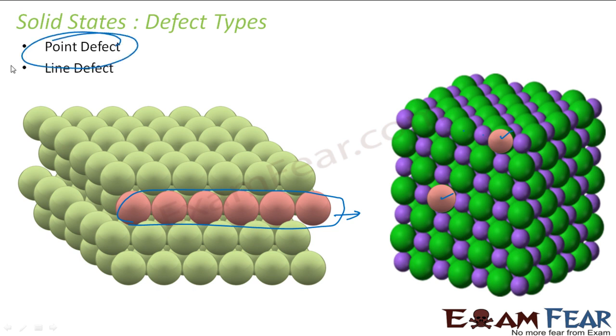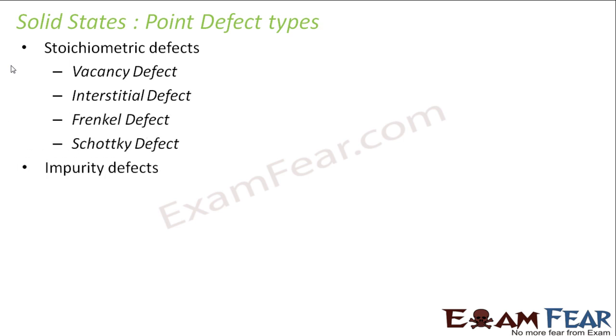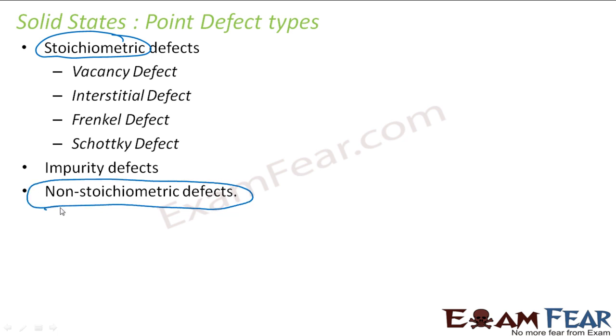We will focus only on the point defects in this chapter. Point defects are also of two types: stoichiometric defects, which include vacancy defects, interstitial defects, Frenkel defects, and Schottky defects. We have impurity defects and non-stoichiometric defects. In stoichiometric defects, the stoichiometry of the substance, the solid, is not impacted. In non-stoichiometric defects, the stoichiometry is impacted. And in impurity, the foreign elements are there.